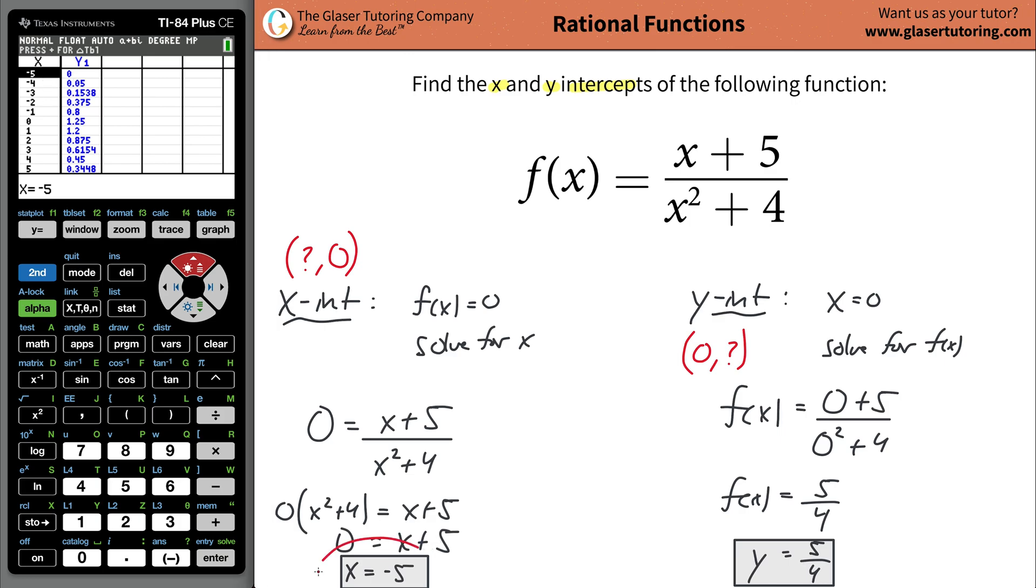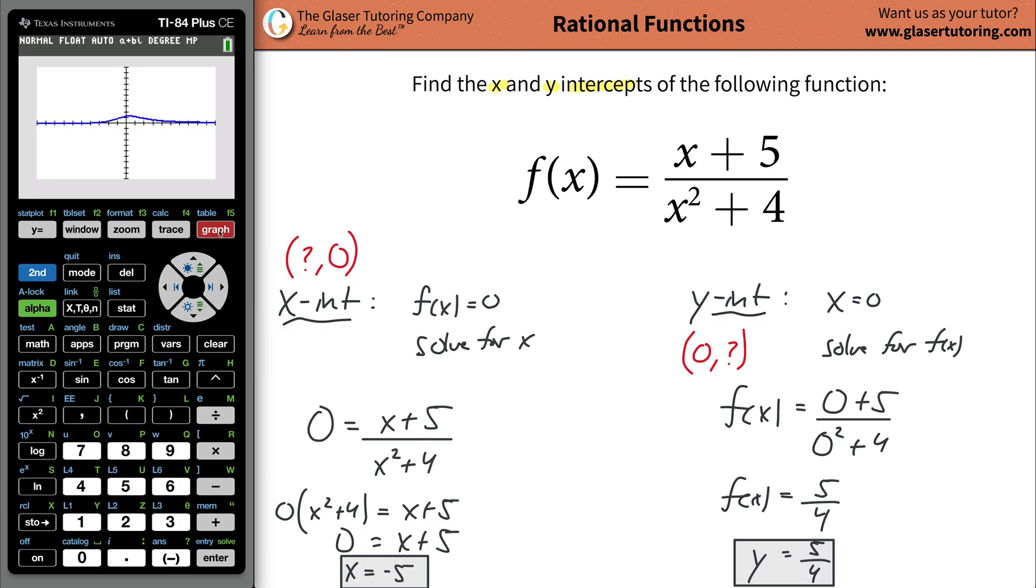That's what we said it should be over here. And now we can't really find the 5 fourths. But if you go down, and why don't we do this now? Let's go to, I'll show it to you. So let's go now to the graph. So if you notice here, let's zoom in a little bit, go zoom in, zoom number two, hit enter.